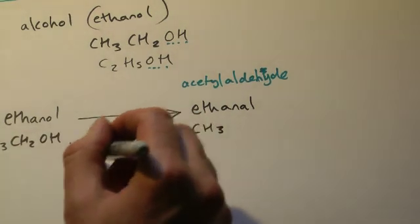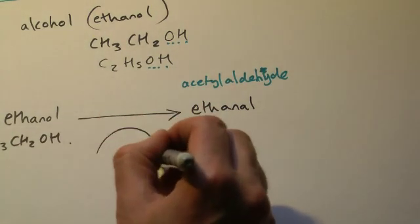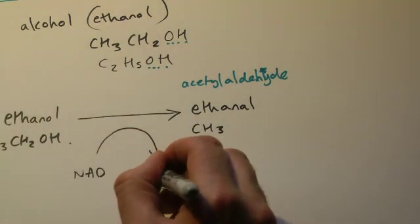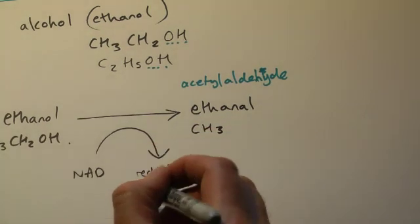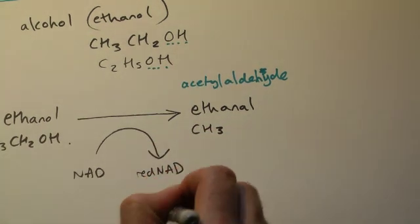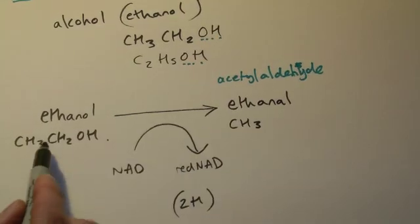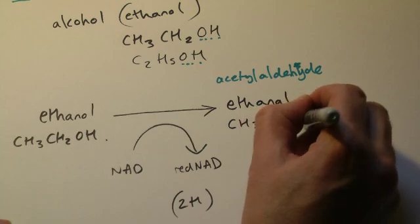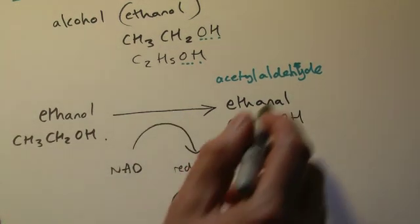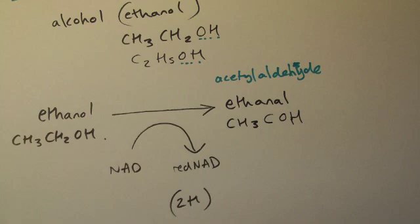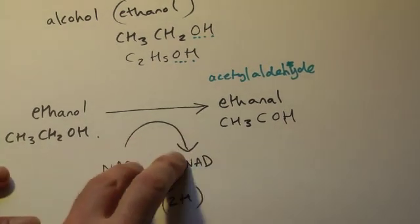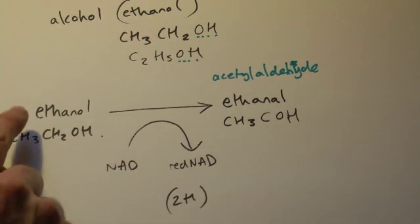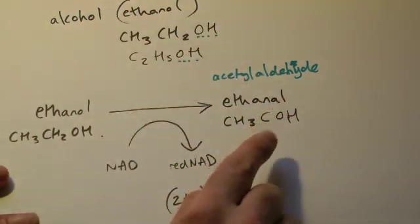What we do here is we oxidise this molecule, we remove hydrogens from it, NAD to reduced NAD. Remember each reduced NAD is two hydrogens that we've taken off. So if we've removed two hydrogens from this, it's CH3COH, that's what ethanal is as a molecule. I think in your books it actually shows you this sort of hydrogen coming off down here, which I think is perhaps confusing, but ethanol is oxidised down to ethanal.